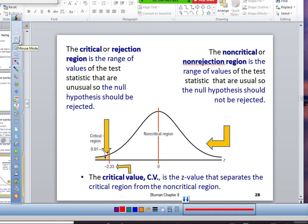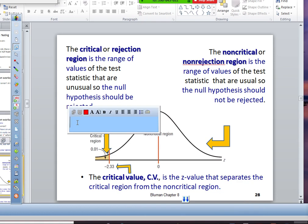The critical region is the range of values of the test statistics that are unusual, so the null hypothesis should be rejected. The critical value, CV, is the z-value that separates the critical region from the non-critical region. Perfect.